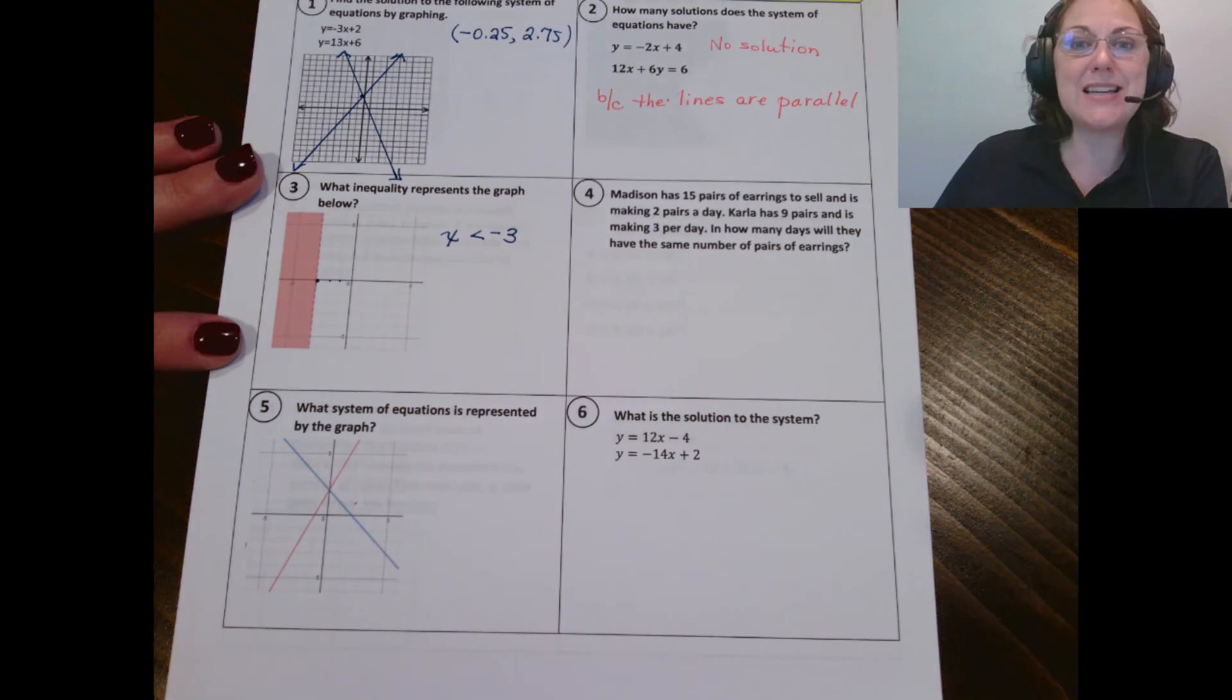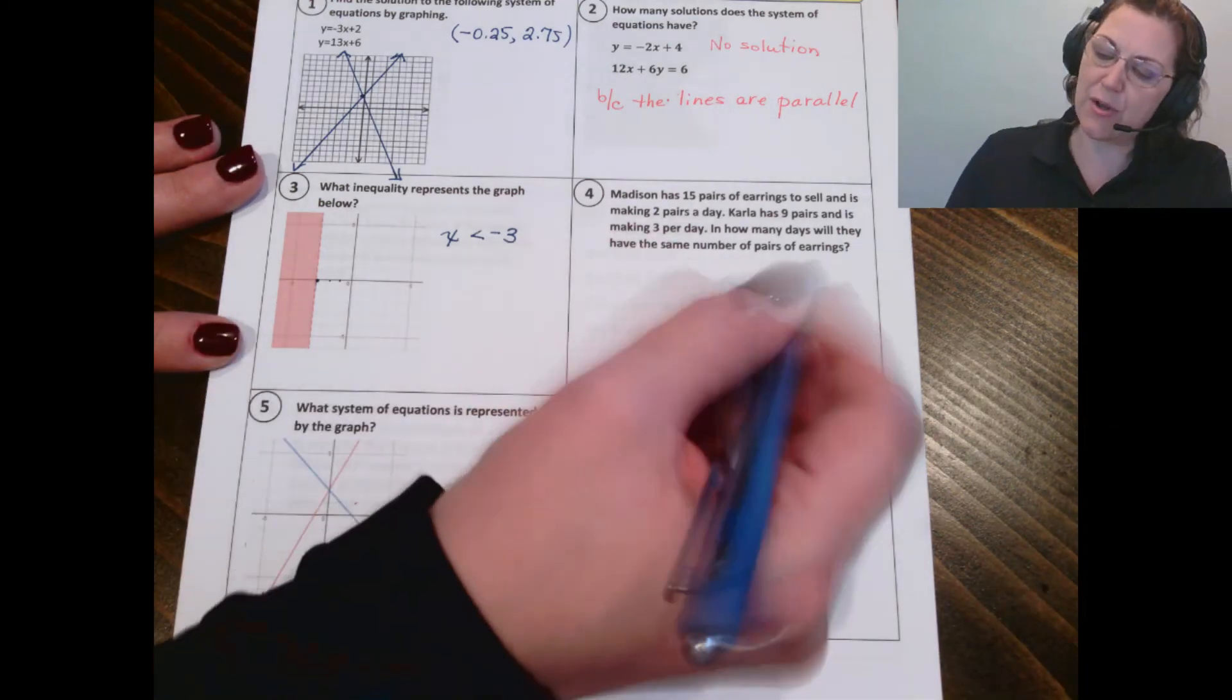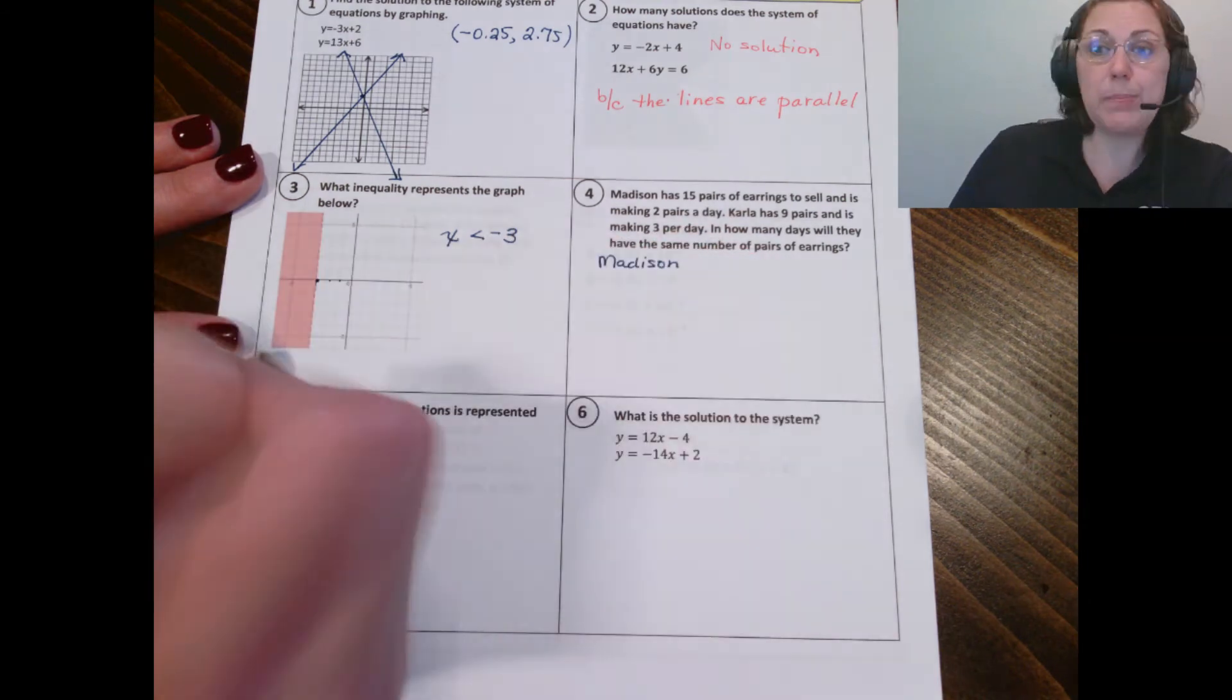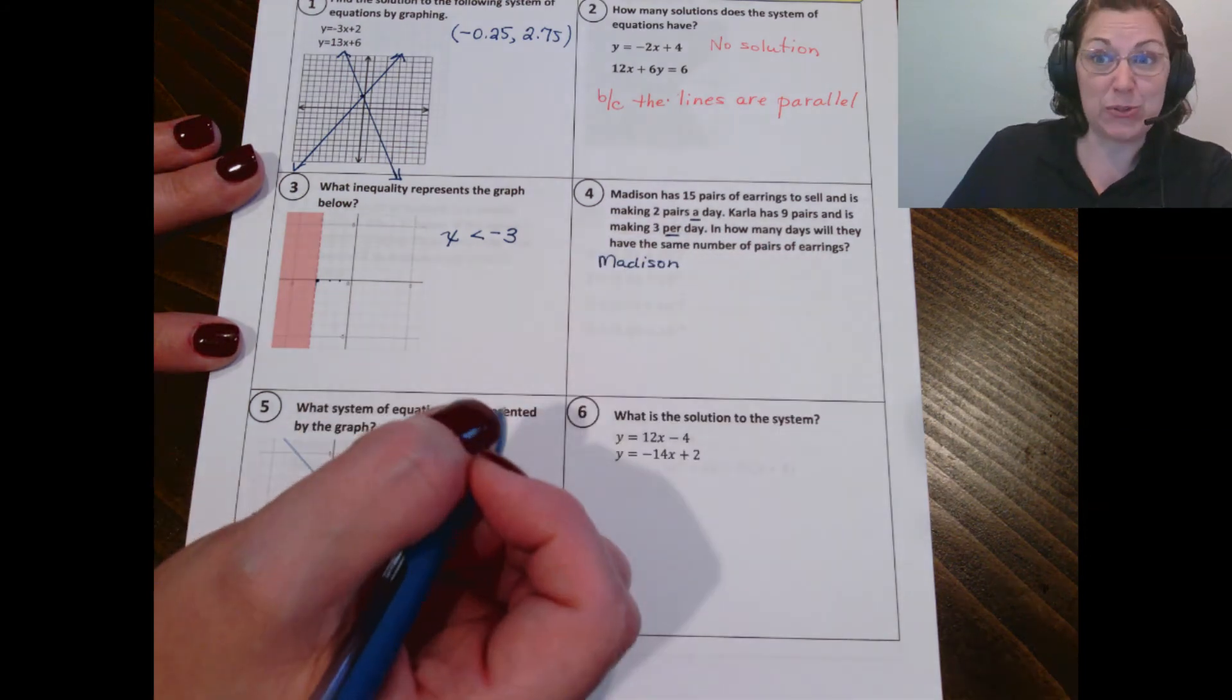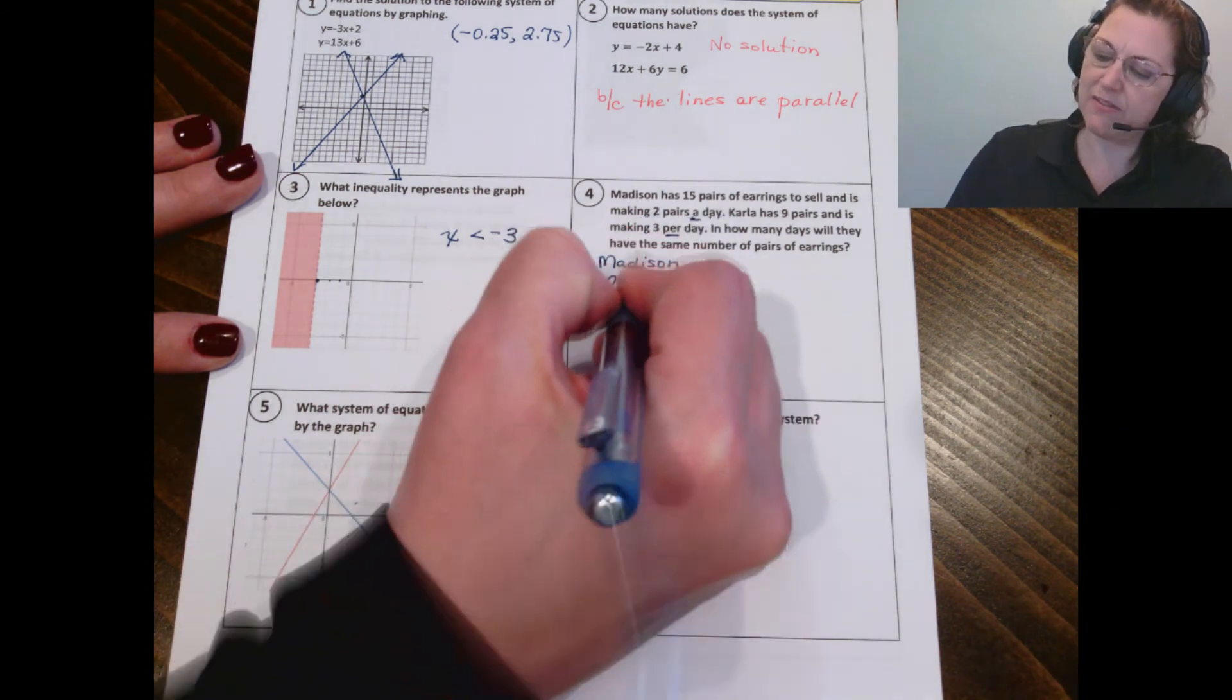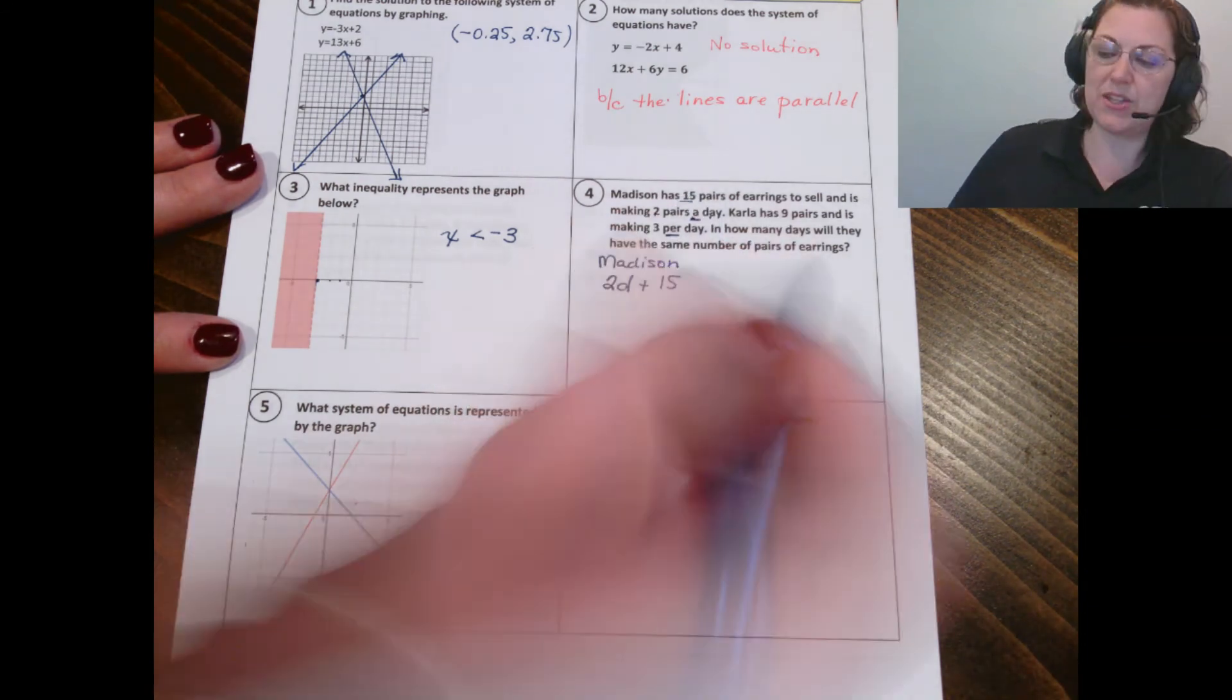Let's look at number four. Madison has 15 pairs of earrings to sell and is making two pairs a day. Carla has nine pairs and is making three pairs a day. How many days will they have the same number of pair of earrings? Let's write an equation first of all for Madison. She is making two pairs a day or two pairs per day. When you see that a day or per day, that's an indication you're going to multiply. So I'm going to do two times a day, maybe I'll put D. And Madison already had 15 to start with. So there's Madison.